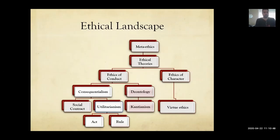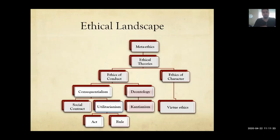Looking back at where we are now and where we started, we talked about some major ethical theories in normative ethics. You can split ethical theories into two main categories: ethics of conduct and ethics of character. Ethics of conduct is about examining people's particular motivations and the consequences of their actions, where ethics of character is about the person's overall character traits and what makes a good person.